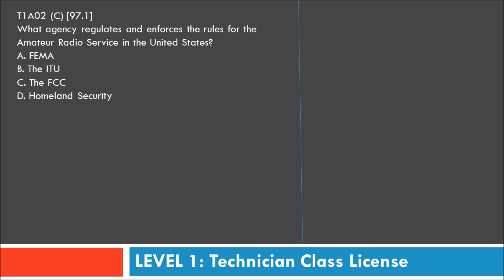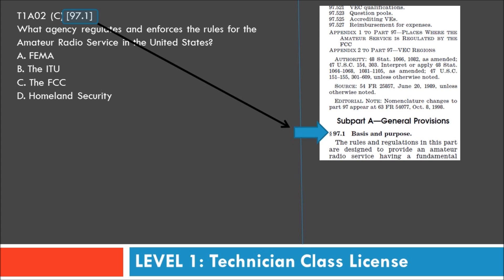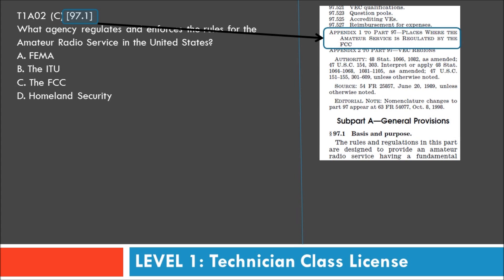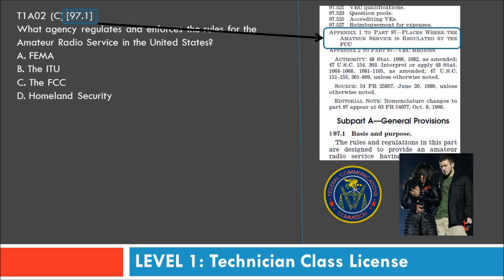Question two: What agency regulates and enforces the rules for the amateur radio service in the United States? It references 97.1, though if you read 97.1 it doesn't directly answer the question — the answer is actually in Appendix One to Part 97, which states that the amateur radio service is regulated by the FCC. So the answer is the FCC.